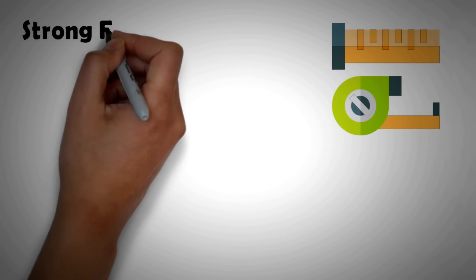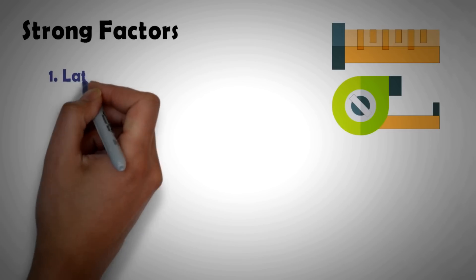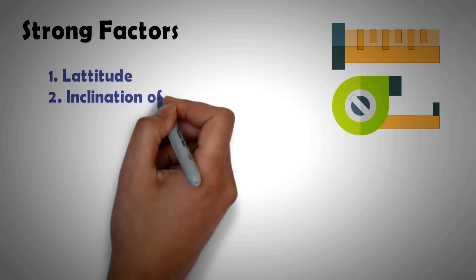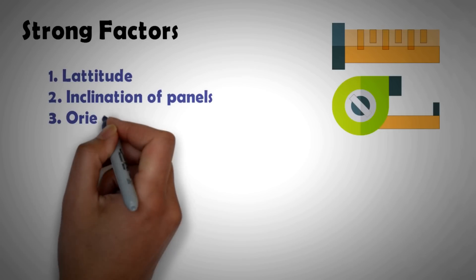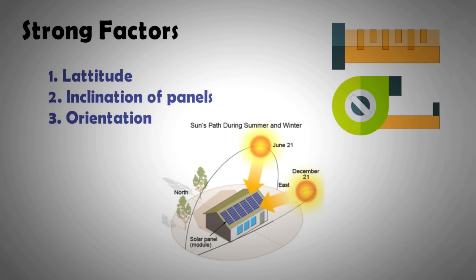There are certain factors that have a very strong bearing on the estimation of solar resource. They are the location, mainly the latitude, the inclination of the panels and the orientation that is the direction that the panel is facing. All the tools take these three fundamental factors into account.